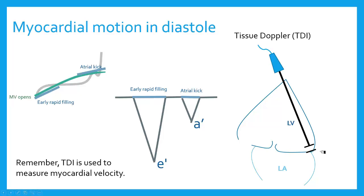For tissue Doppler, I measure the lateral myocardium right at the mitral valve apparatus. I put my tissue Doppler right over that area and measure myocardial velocity. The left ventricle relaxes away from the probe as it opens and accommodates blood — it expands. The two major reflections I get in myocardial movement are reflective of early rapid filling and the atrial kick. We call them E prime and A prime — the tissue Doppler equivalents of my E and A wave.